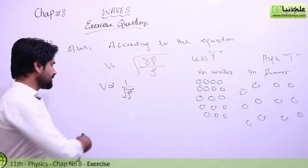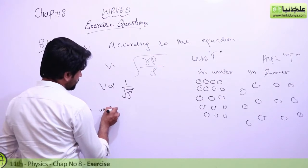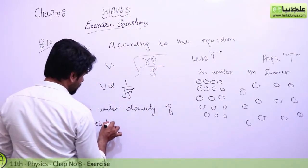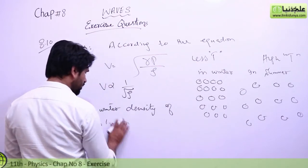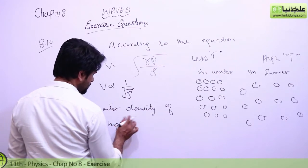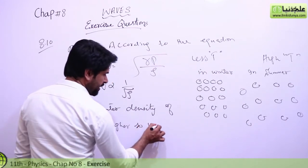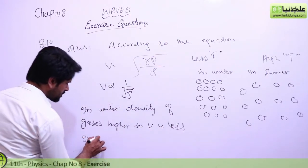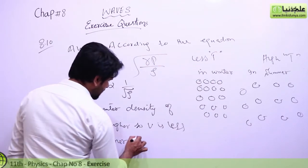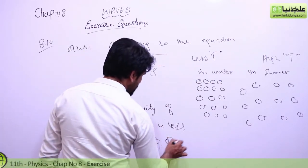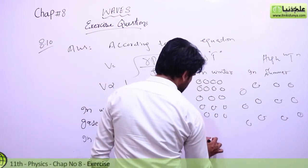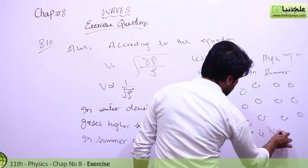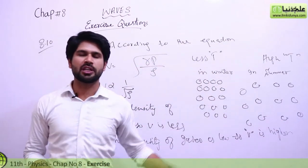So we can write the answer as: in winter, the density of the gas is higher, so the speed V is less. And in summer, the density of the gases is low, so the speed V is high. You can also use your own words to explain this answer.